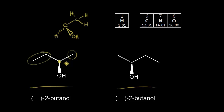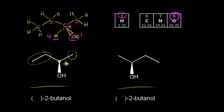The ethyl group is a CH2 then CH3. Looking at the atoms directly bonded to the chiral carbon, there's an oxygen, a hydrogen, and two carbons. Oxygen has the highest atomic number, so OH gets highest priority — number one. Hydrogen has the lowest atomic number, so it gets number four. We're left with two carbons, which is a tie since carbon has atomic number six, so we need to find a way to break the tie.